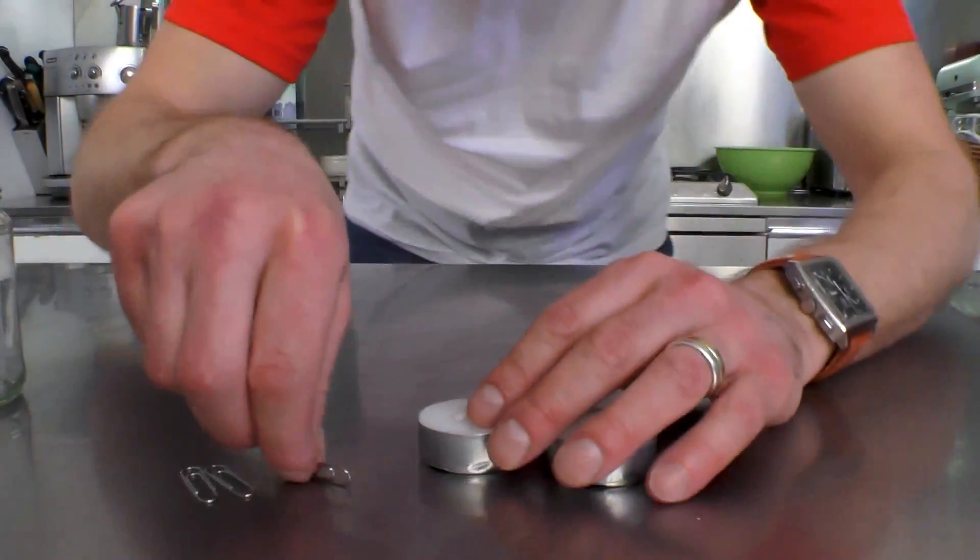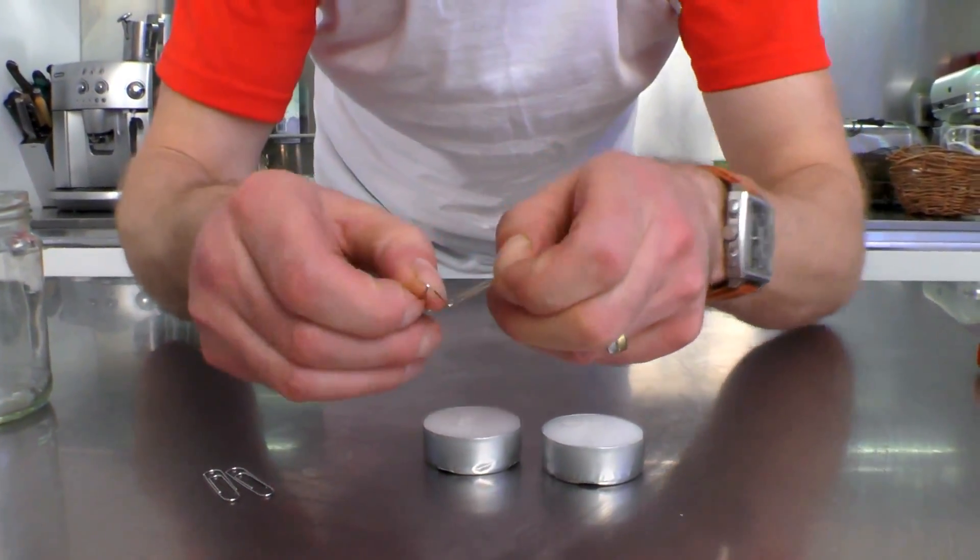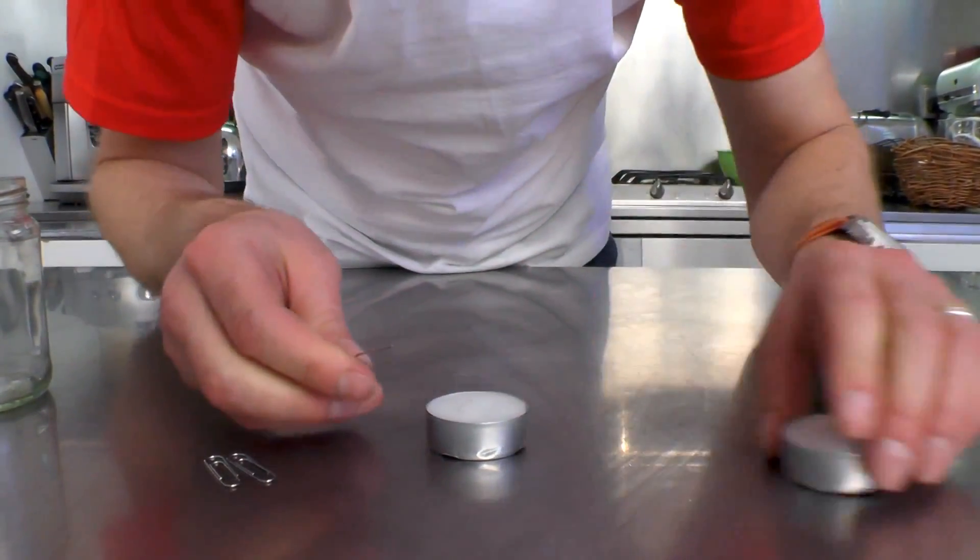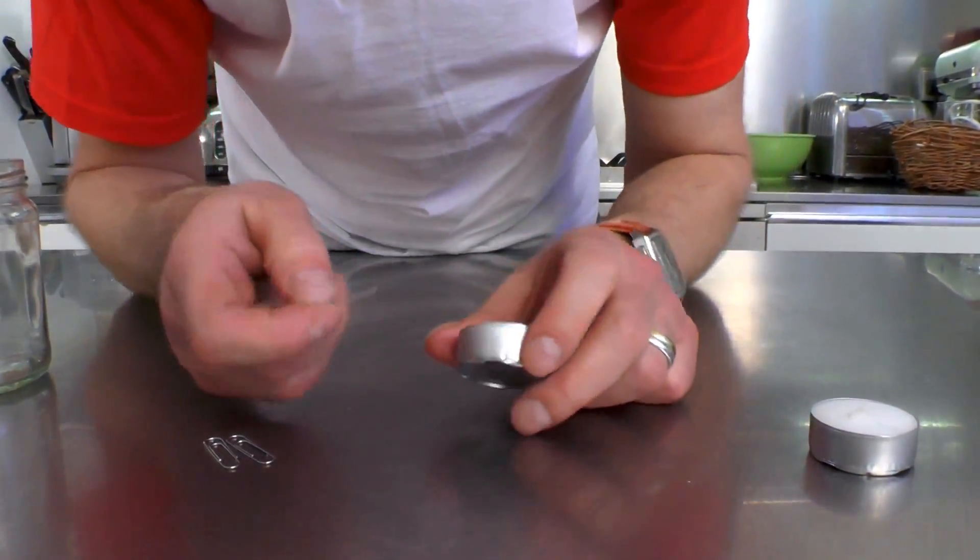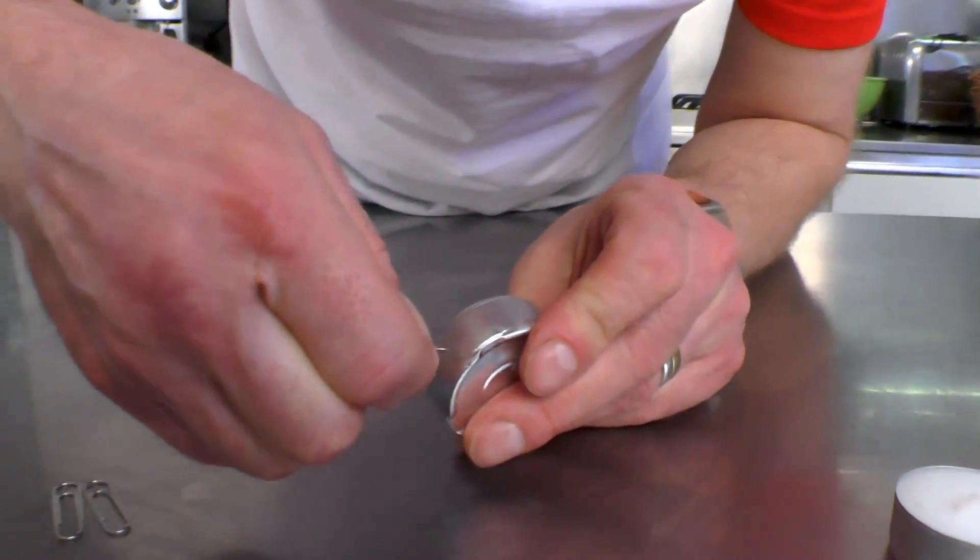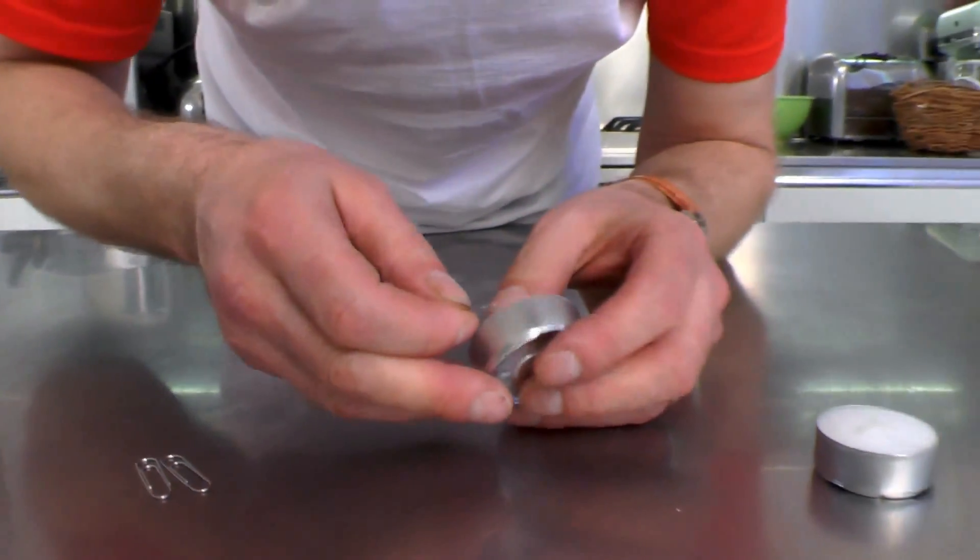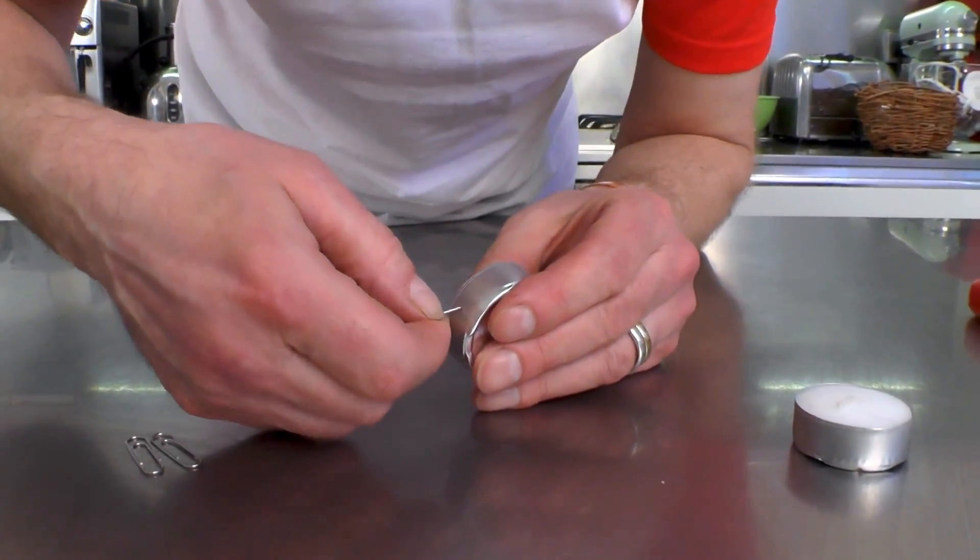Next up, the smoke generator. So what you need to do - you need to unfold one of these paper clips and then take one of your tea lights and use the paper clip to push a hole into it, just in the side.